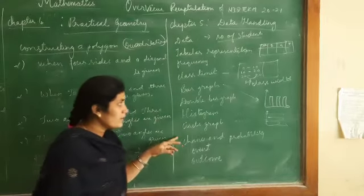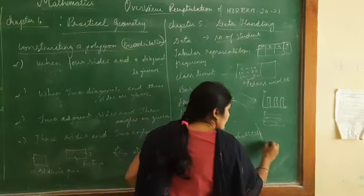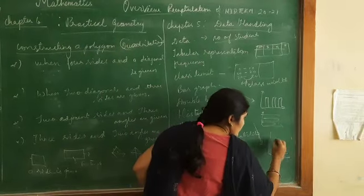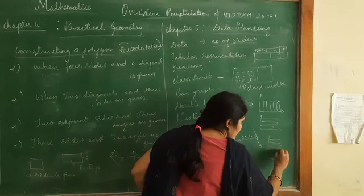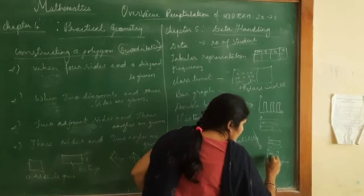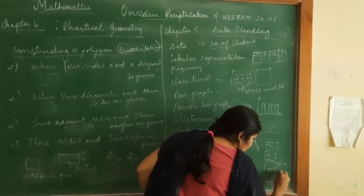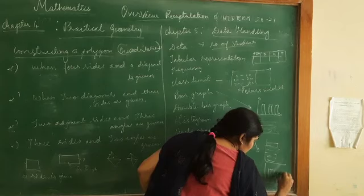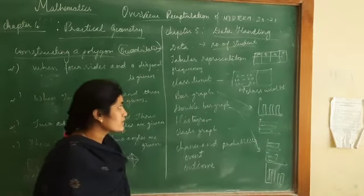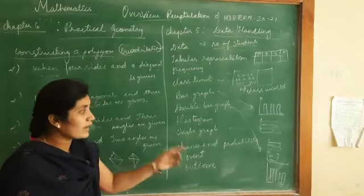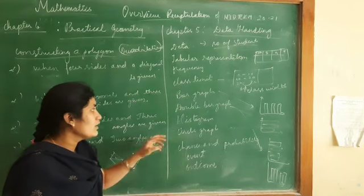Double bar graph is where double bars are shown to compare data across two categories. This is a rectangular representation to show the data.